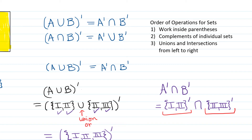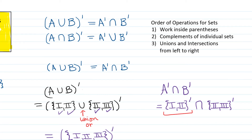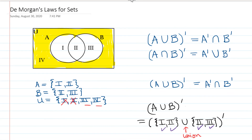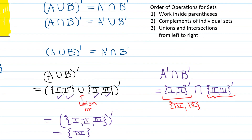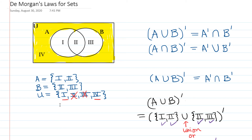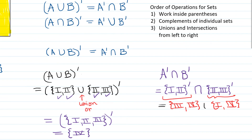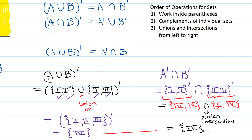The complement of the set containing I and II means everything in the universal set not in I and II, which is III and IV. The complement of the set containing II and III is I and IV. Next, we find the intersection of those two sets — the elements they have in common. The only element in common is region IV. So we get the same result for both sides, proving the first of DeMorgan's Laws.